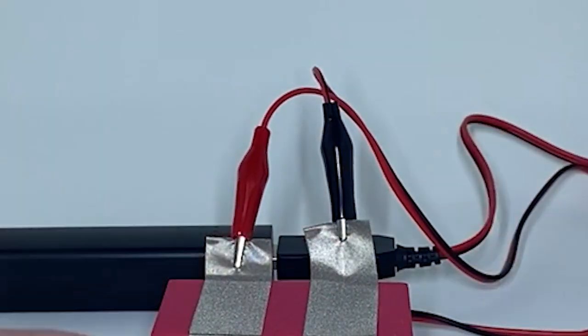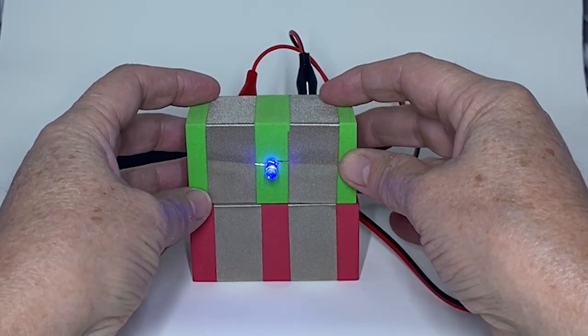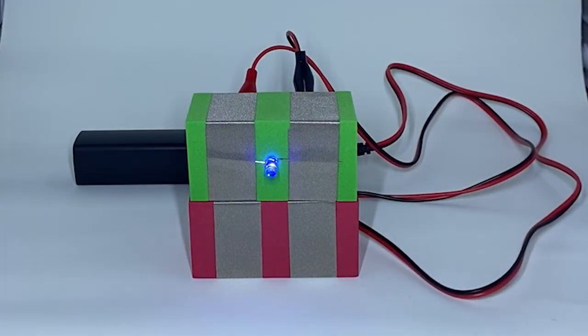Connect the black alligator clip to the other flap. Put a light tape next to the power tape block to complete the circuit and see the light.